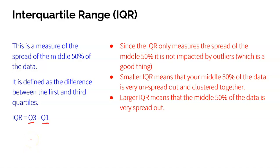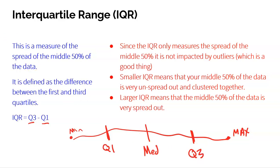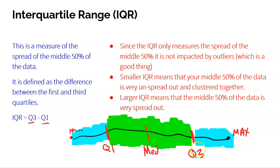The third quartile is the 75th percentile. If we think about our data from the min to the max, right smack in the middle is the median — 50% above, 50% below. The middle of the bottom half is known as the first quartile (Q1), and the middle of the top half is known as the third quartile (Q3). When you break your data into these quartiles, you're essentially breaking your data into 25% chunks — four chunks of 25% covering 100% of all your data.